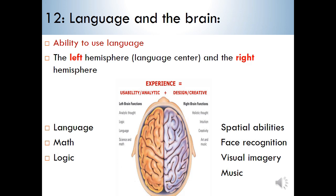The brain has two hemispheres. There is the left hemisphere and there is the right hemisphere. The left hemisphere is generally responsible for processing language, math, and logic.